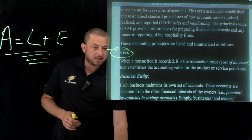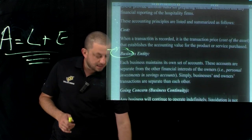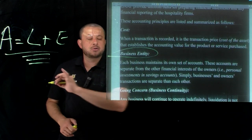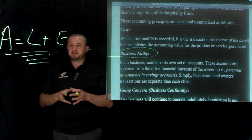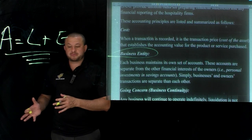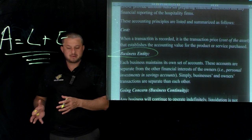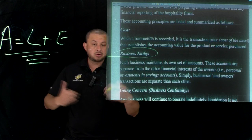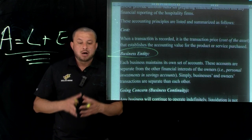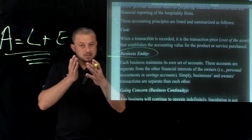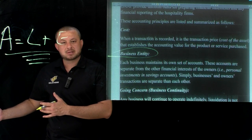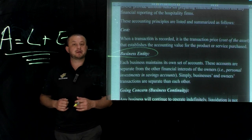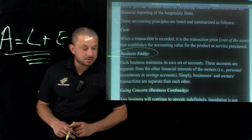Business entity tells us that each business has its own entity. Therefore, owners of businesses cannot be mixed with business operations. Businesses have buildings, land, fixed assets, and current assets — owners and shareholders cannot claim those assets or use them for their personal benefit. That's what business entity means.